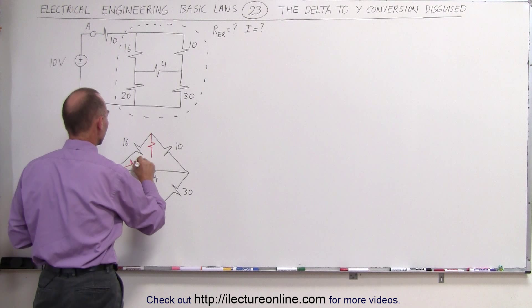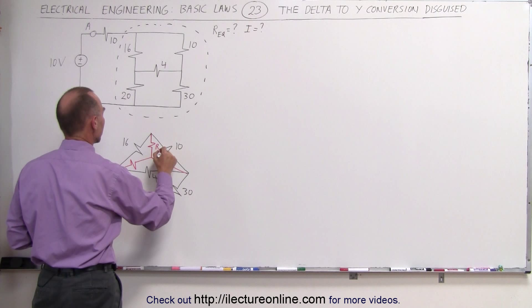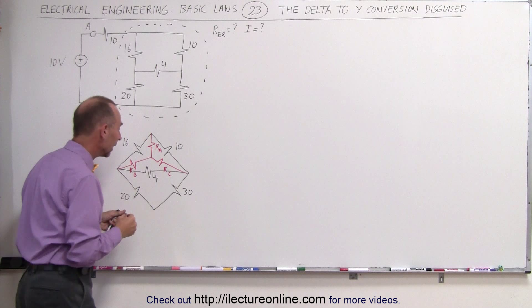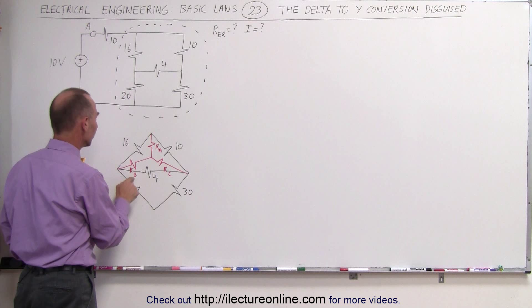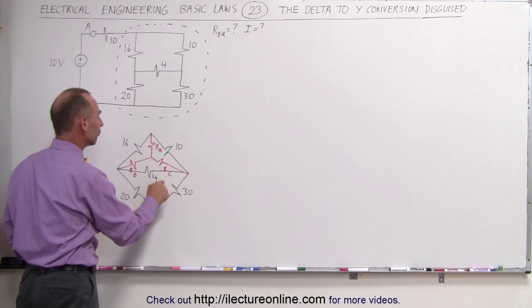Let's call this R sub A. Let's call this R sub B. And let's call this R sub C. Again, recognize that R sub A is between the 10 and the 16-ohm resistor. R sub C is between the 10 and the 4-ohm resistor. Which allows us to find the value of R sub A, R sub B, and R sub C.